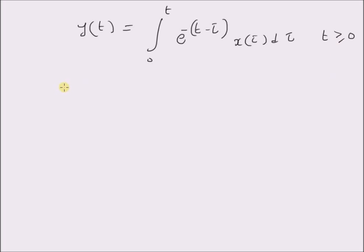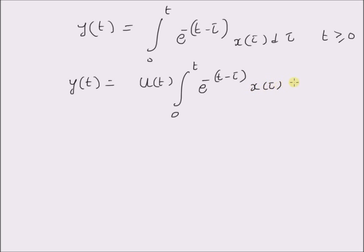This definition can also be written as y of t is equal to u of t multiplied by the integral from 0 to t of e power minus (t minus tau) x of tau d tau. Now the impulse response can be calculated or evaluated as follows.